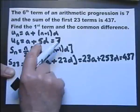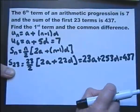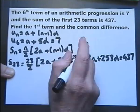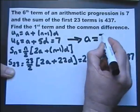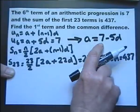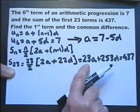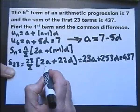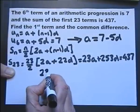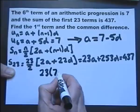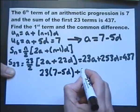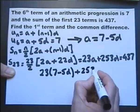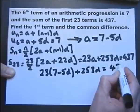So we have two equations with A and D and can solve them as simultaneous equations. I'm going to make A the subject of the first equation by subtracting 5D from both sides, giving A equals 7 minus 5D. I'll then substitute this into the second equation, so instead of 23A I get 23 multiplied by (7 minus 5D), added to 253D equals 437.